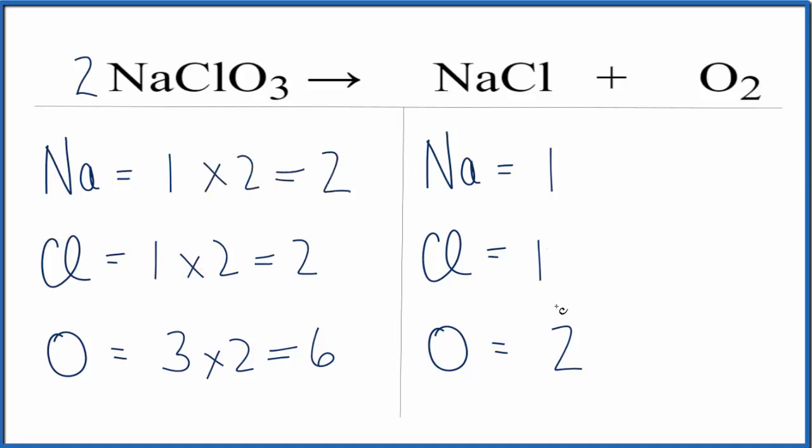On the product side, we need to get our oxygens fixed. We had six here and now that that's an even number, we could put a three in front of the O2. Two times three, that equals six and then we need two chlorines and then two sodiums.